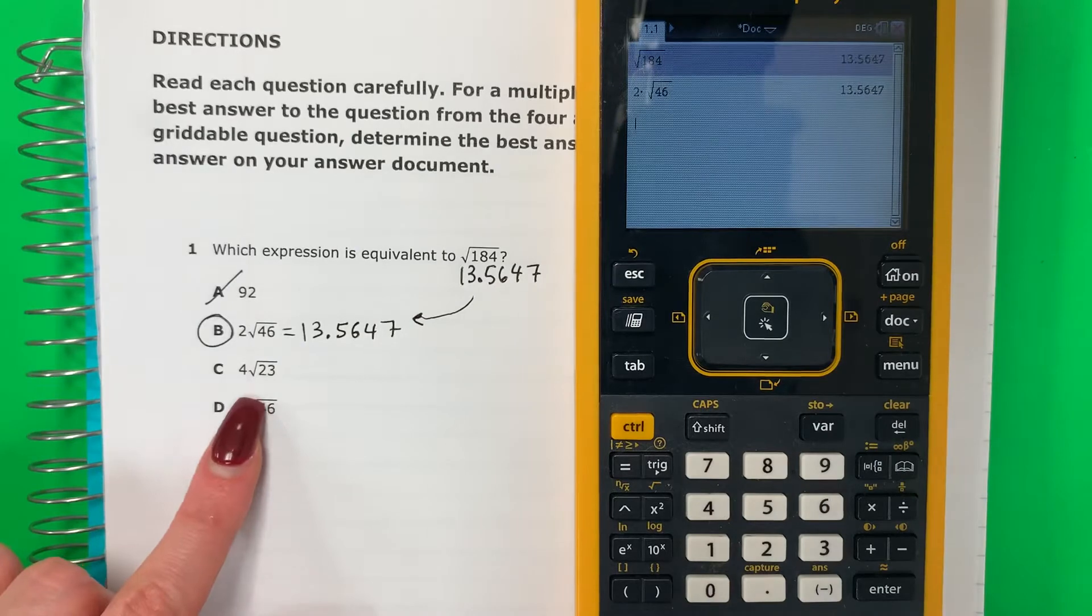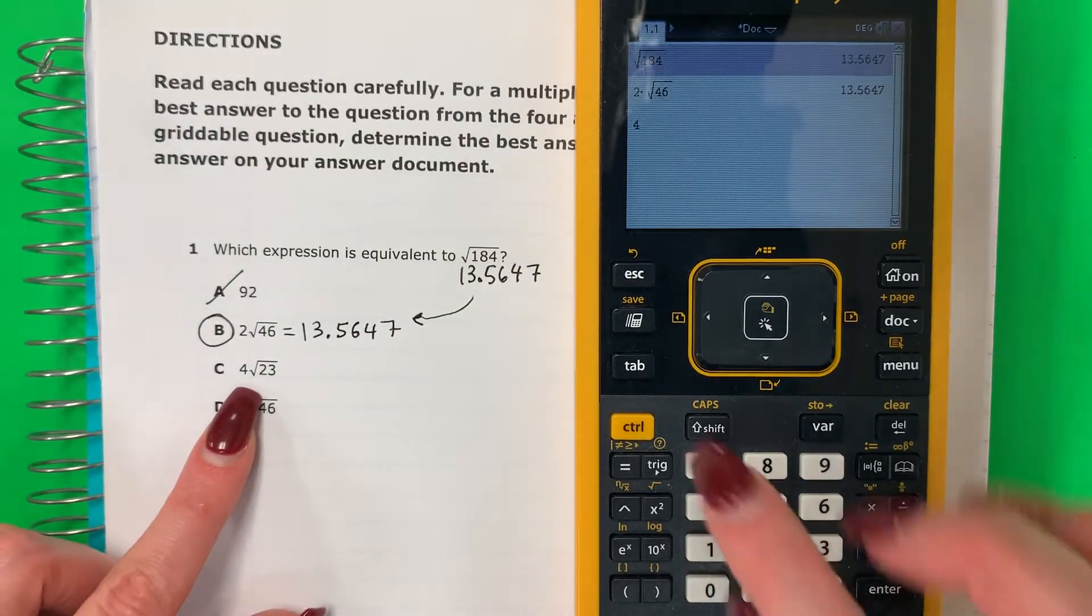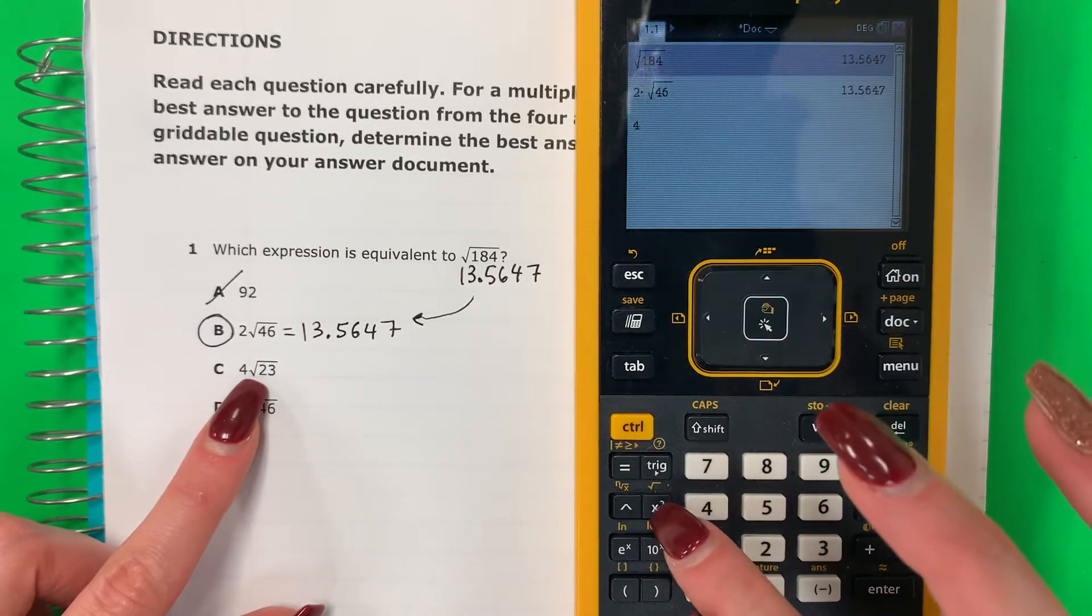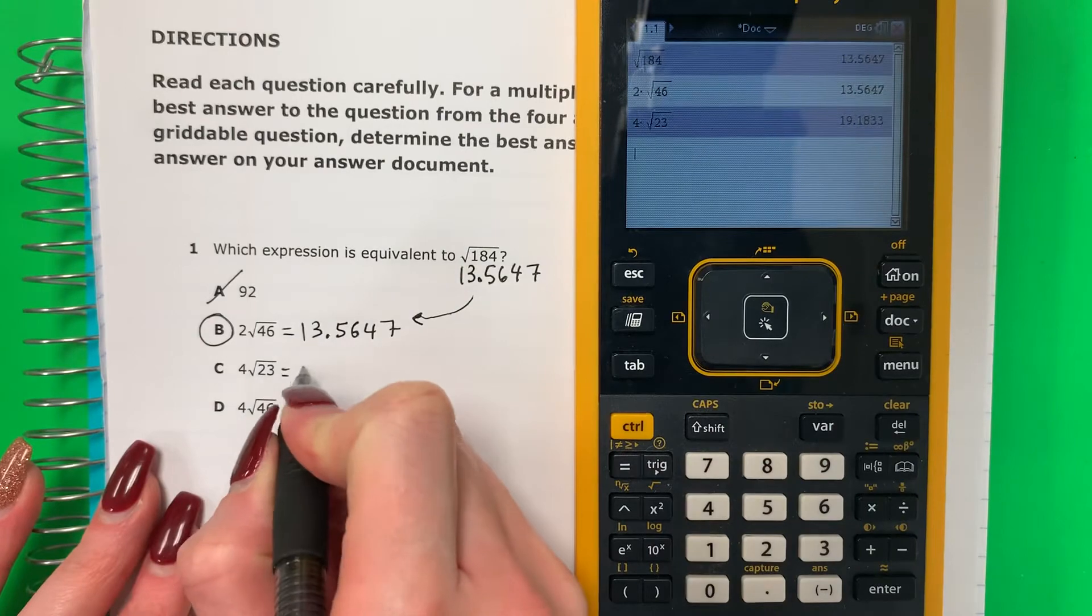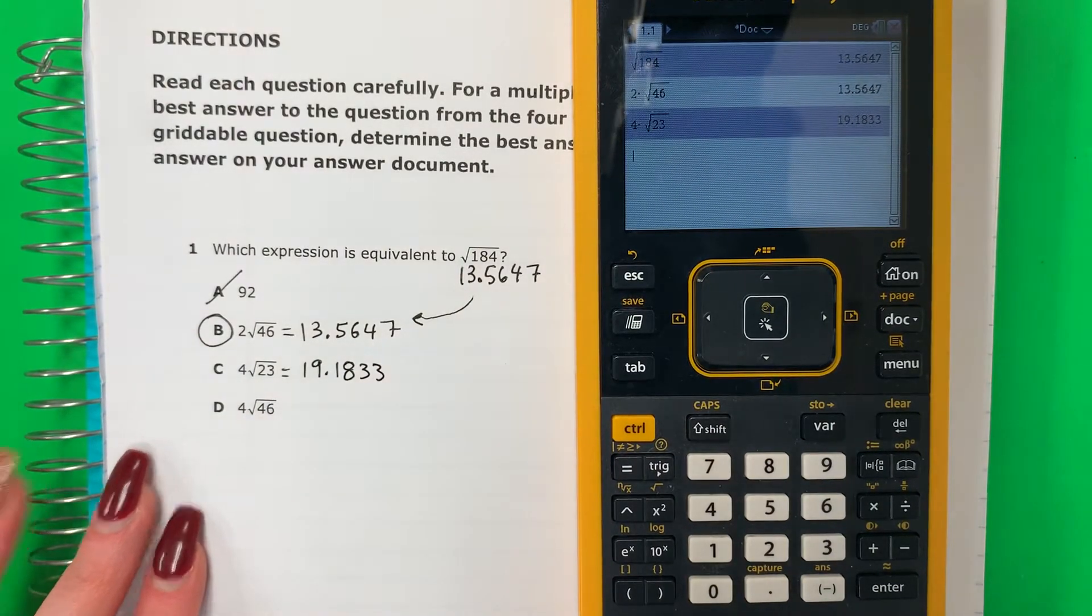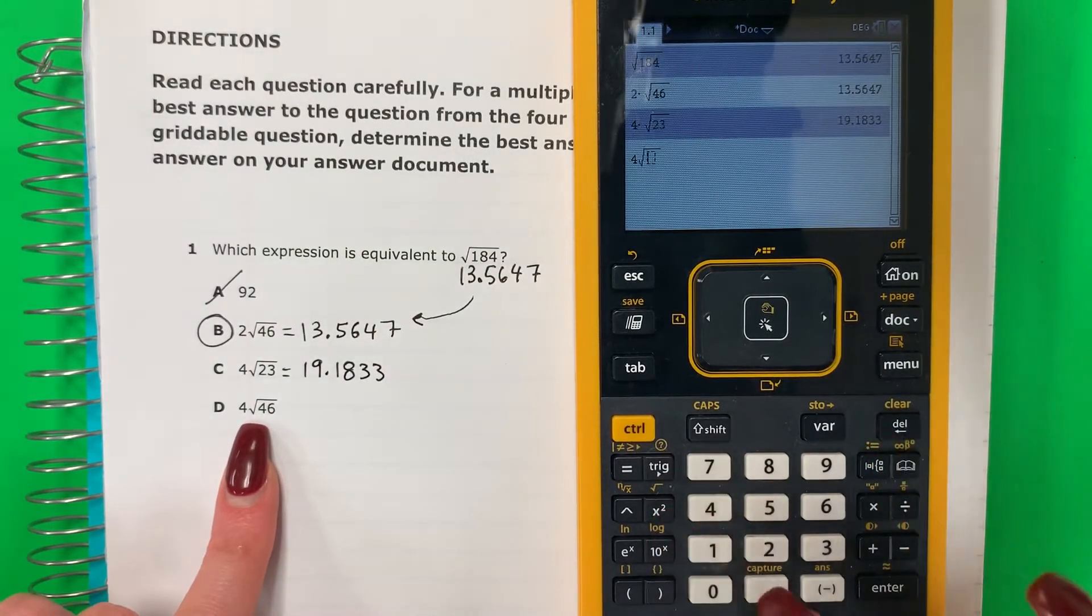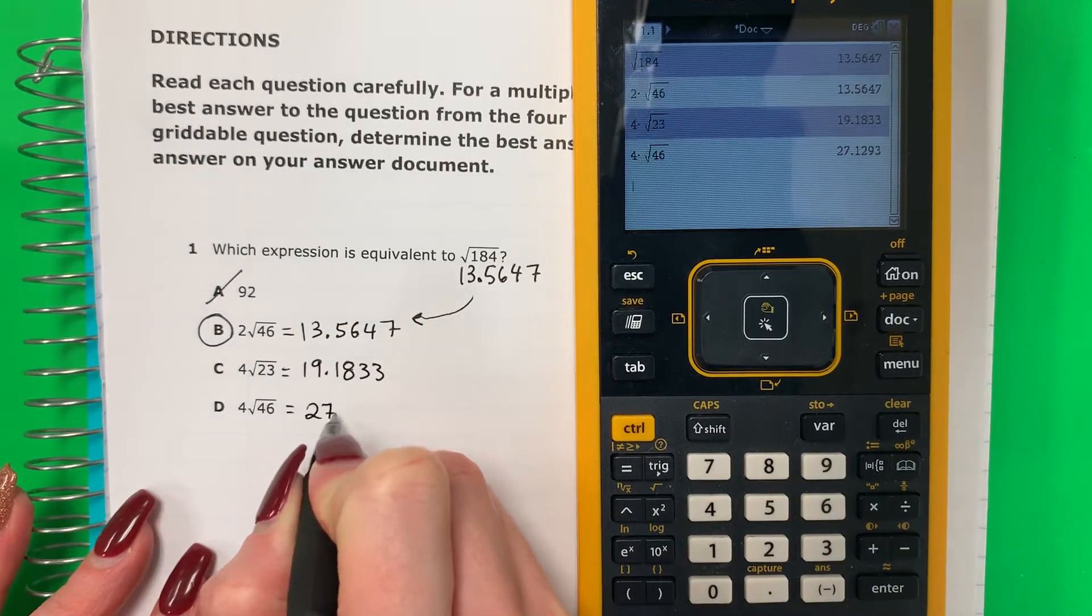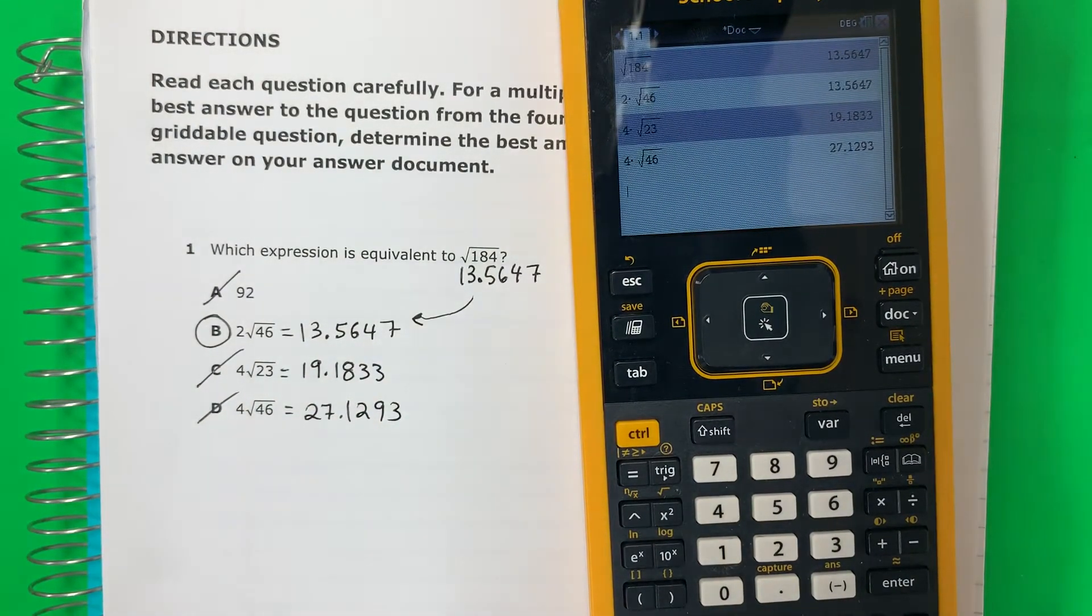Let's check the other ones just to be sure. Vamos a verificar los otros. So 4, and then to get the square root, para tener el raíz cuadrado, it's control, x squared, 23. That's 19.1833. So that's not good. No es bueno. Let's try the next one. 4, control, x squared, 46. Enter. This one is 27.1293. So these are wrong. Son malos.